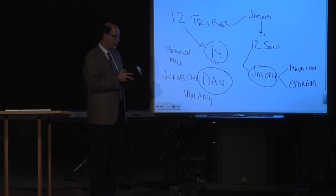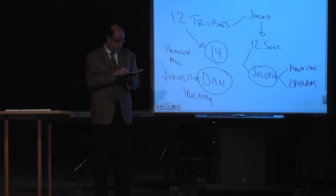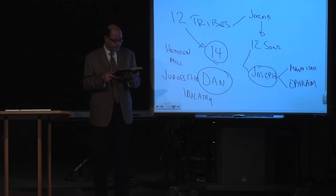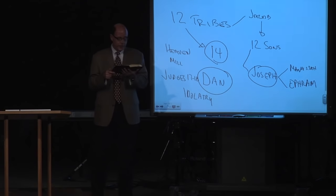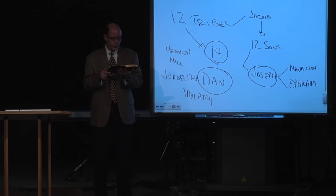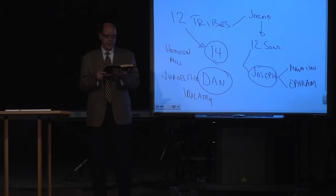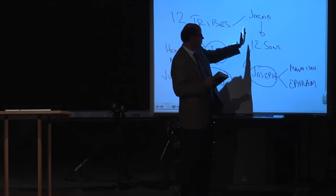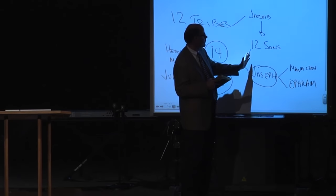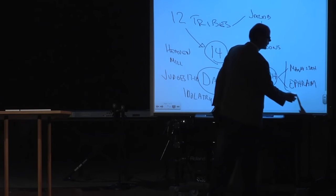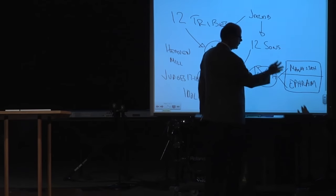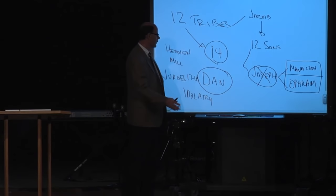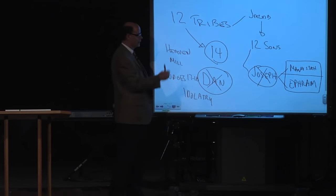The quick answer is that depending on what God wants to communicate, he uses differing tribal lists. In Revelation 21, the gates of the heavenly city bear the names of the 12 tribes. In the millennium descriptions, Dan is knocked out and Joseph is put back in. But in the foundations of heaven, Dan appears to be back in.